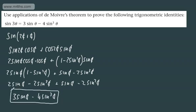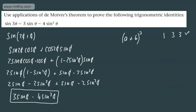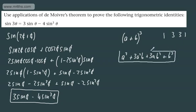The problem with the traditional method is that if the question changes to a higher power, it gets huge. Instead, we can use De Moivre's theorem with the binomial expansion. Let's review: for (a + b)³, using Pascal's triangle the coefficients are 1, 3, 3, 1, giving a³ + 3a²b + 3ab² + b³.